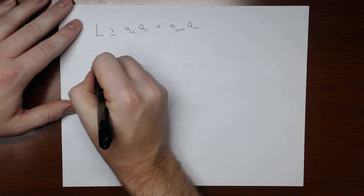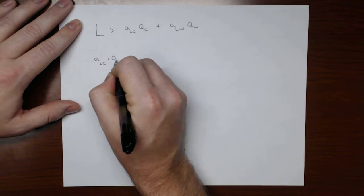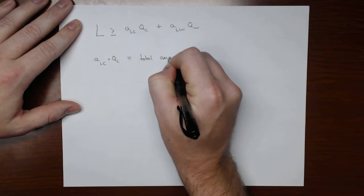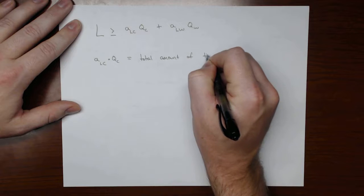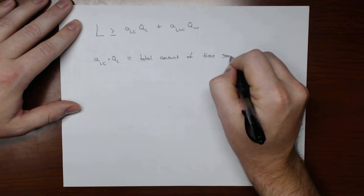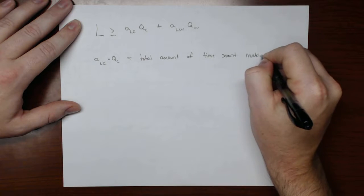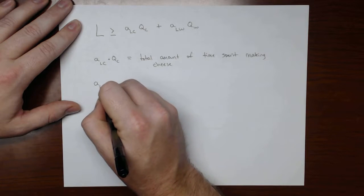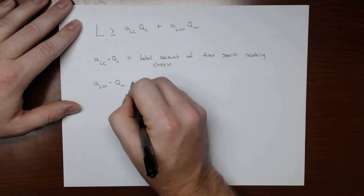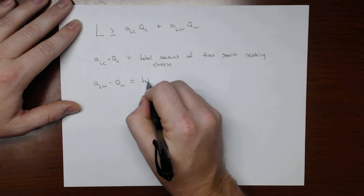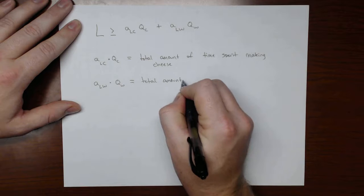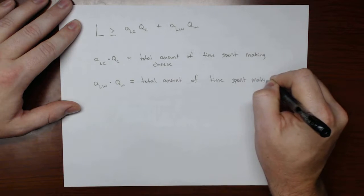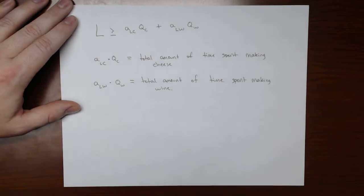So remember, if we think about this, ALC times QC is going to be equal to the total amount of time spent making cheese, and ALW times QW is going to be equal to the total amount of time spent making wine.